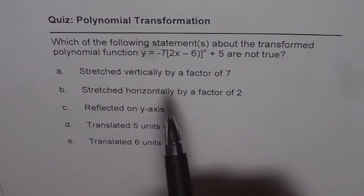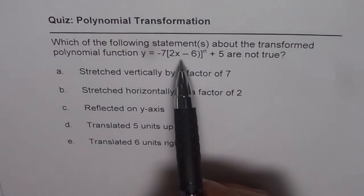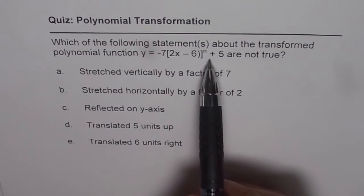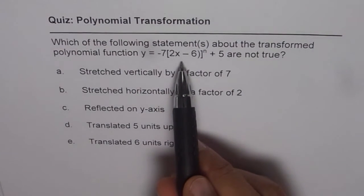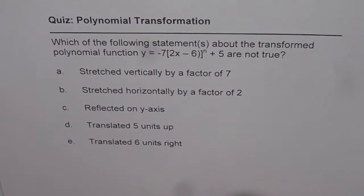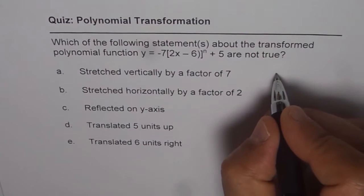So, we are given the function y = -7(2x - 6)^n + 5. Let us write down this function in the factored form and then look into the transformation. If I write this in factored form,